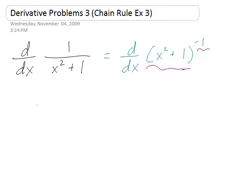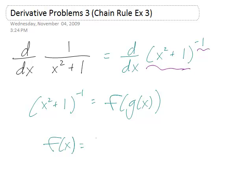And so if we write x squared plus 1 to the minus 1 as f of g of x, f of x is sort of the outer layer, the last thing you do, is x to the minus 1, or 1 over x. But since we're using the power rule, it's nicer to use the power form. And g of x is the rest, which is x squared plus 1.